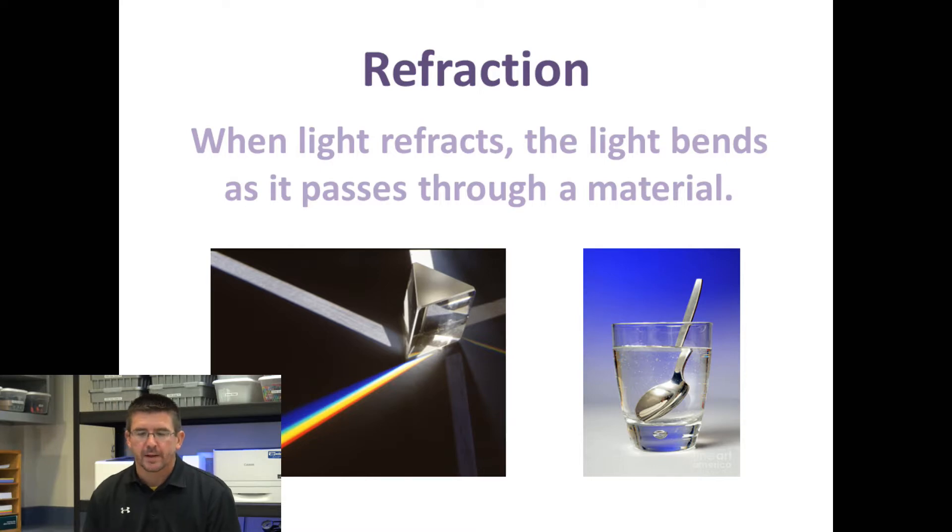Refraction occurs when light actually travels through an object, but as it passes through it bends. When light is refracted, it can distort the light wave and send different frequencies of light in different directions.